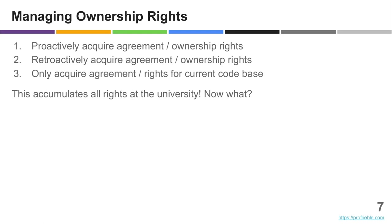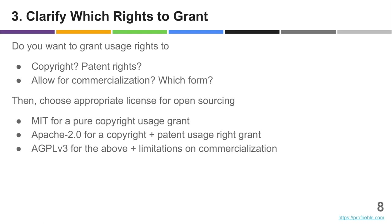So let's assume you've got that right, or you fixed it afterwards, and the university has the right to open source. Now what? We need to go back to the purpose of open sourcing — why are you doing it? This means: what do you want to empower people with, or what do you want them to receive? Do you want people to solely receive a usage right to the code? Do you also want to make any patents available that are in the code? That makes a difference in which license you choose.